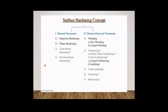As mentioned, there are mainly two types of surface hardening: thermal hardening and thermochemical hardening. Under thermochemical treatments we have nitriding - with two types: gas nitriding and liquid nitriding - then carburizing with three types: pack carburizing, gas carburizing, and liquid carburizing, then carbonitriding, chroming, and boronizing. Thermal heat treatment consists mainly of induction hardening and flame hardening.